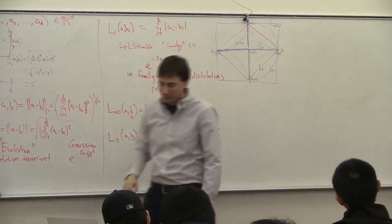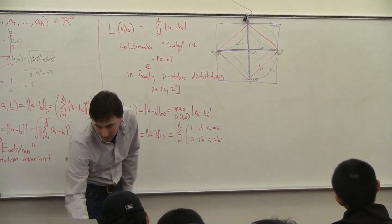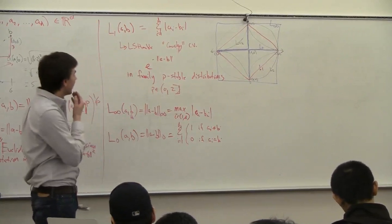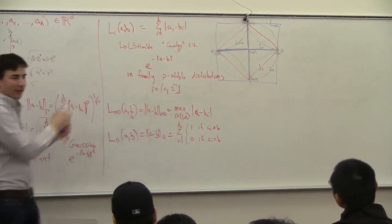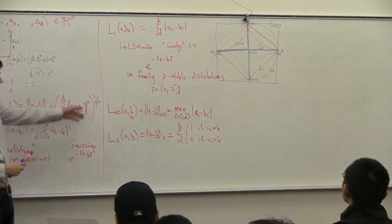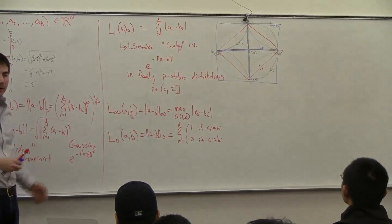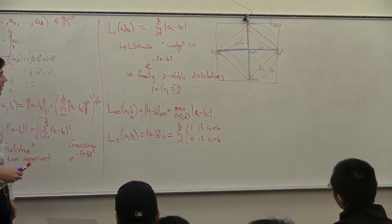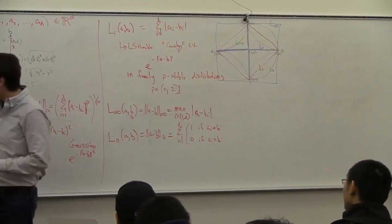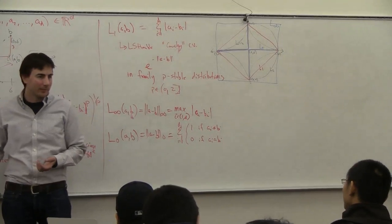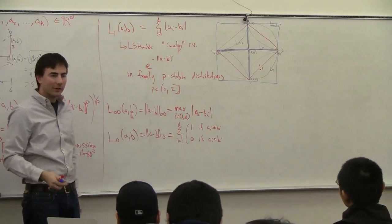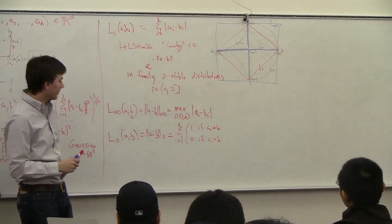So other than this picture and these different definitions, I hope this drives home the point that you could change the P in the LP norm by a little bit and you'd still have a valid distance — it's still a metric, it still satisfies all these properties — but the distance is slightly different. So don't take too much faith in the exactness of your distance.